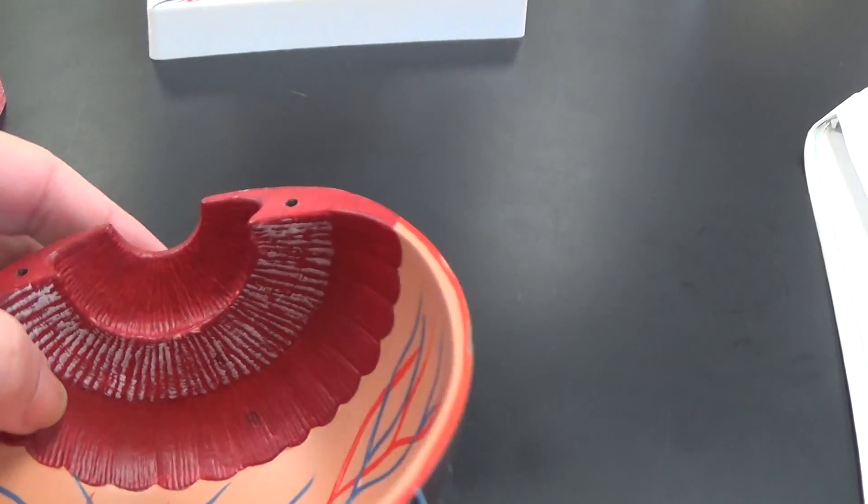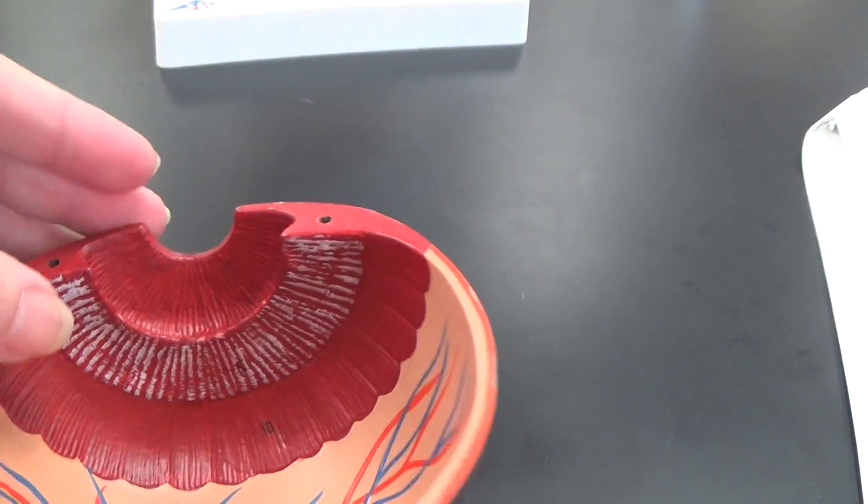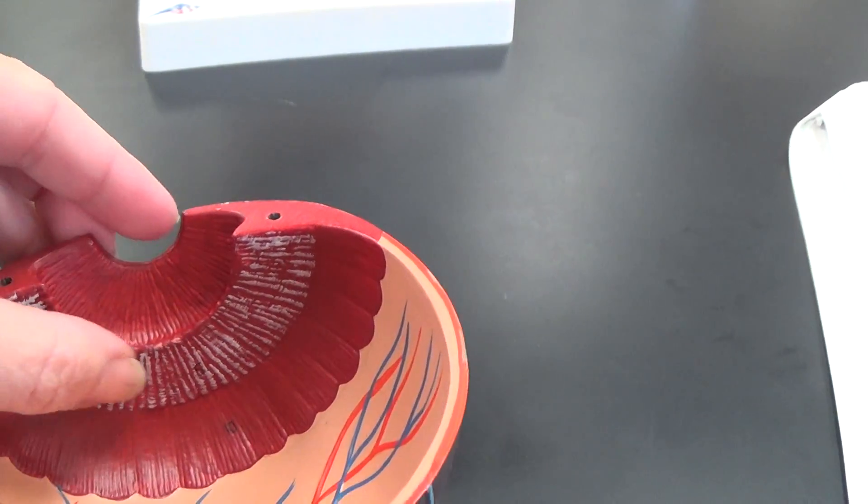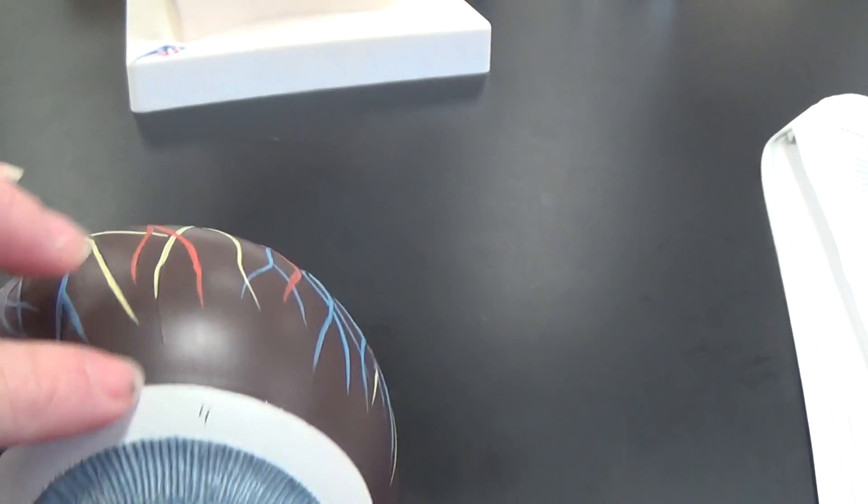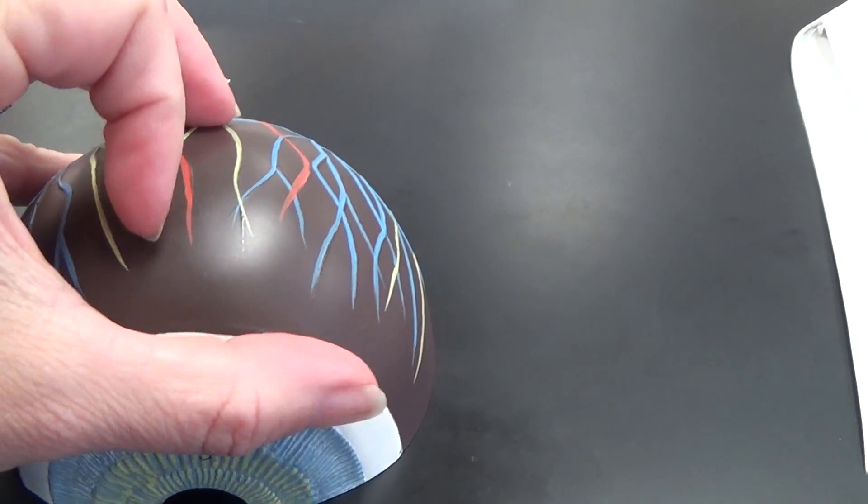On the inside here, the scalloped area is the ora serrata, and this area with the white lines is the ciliary muscle or ciliary body. We can also see that on this side is this white line going around.